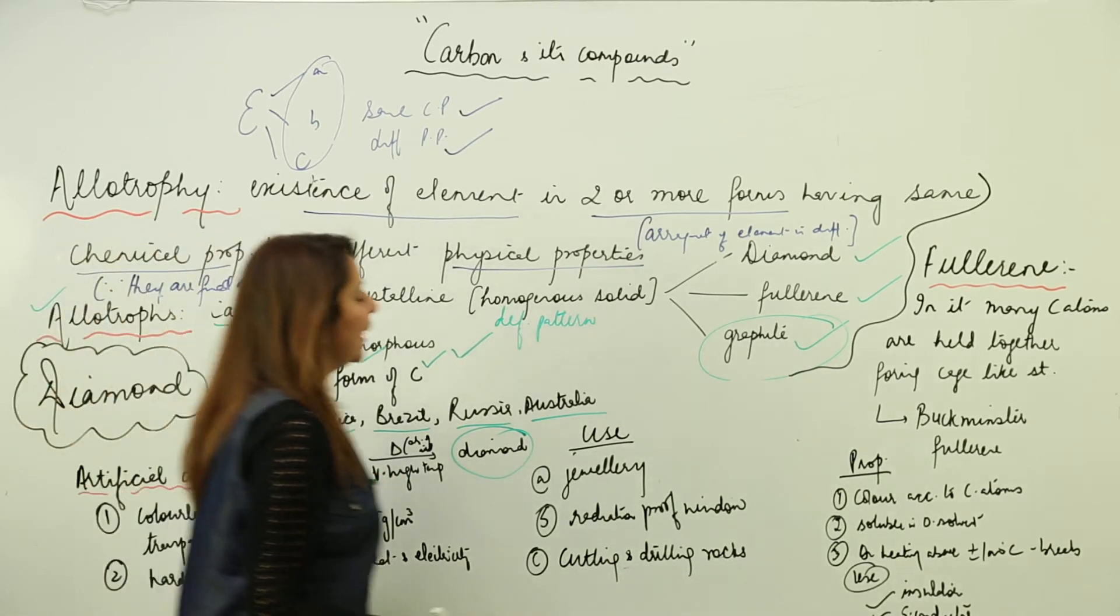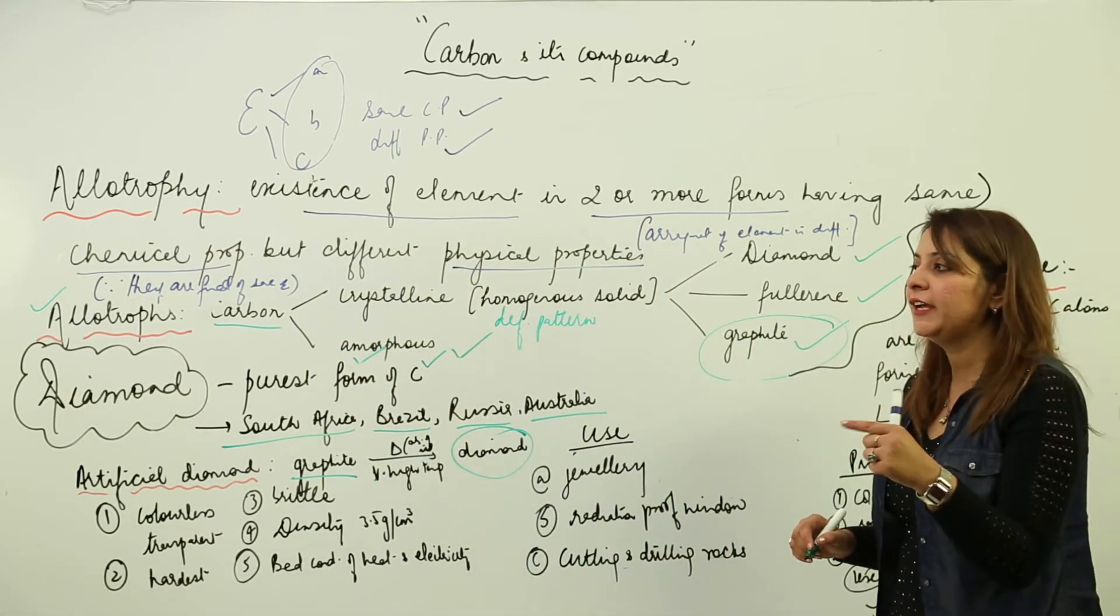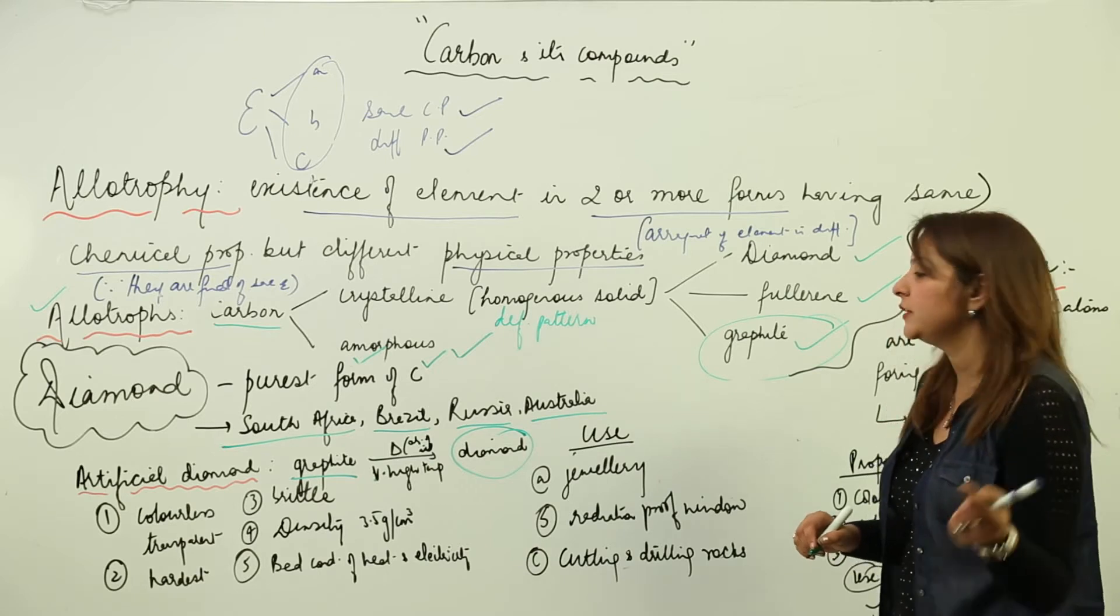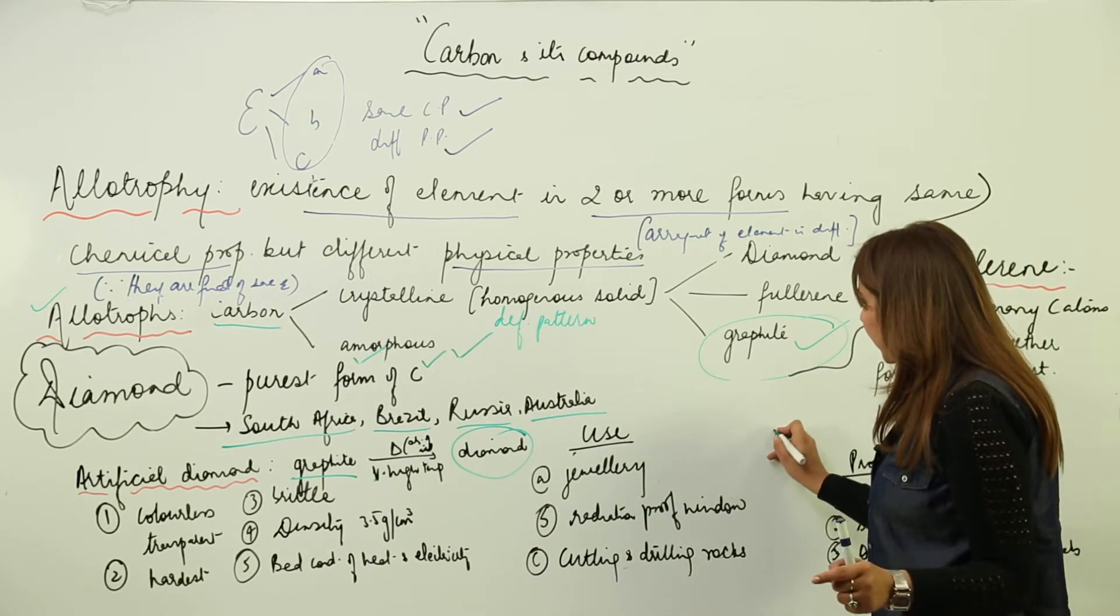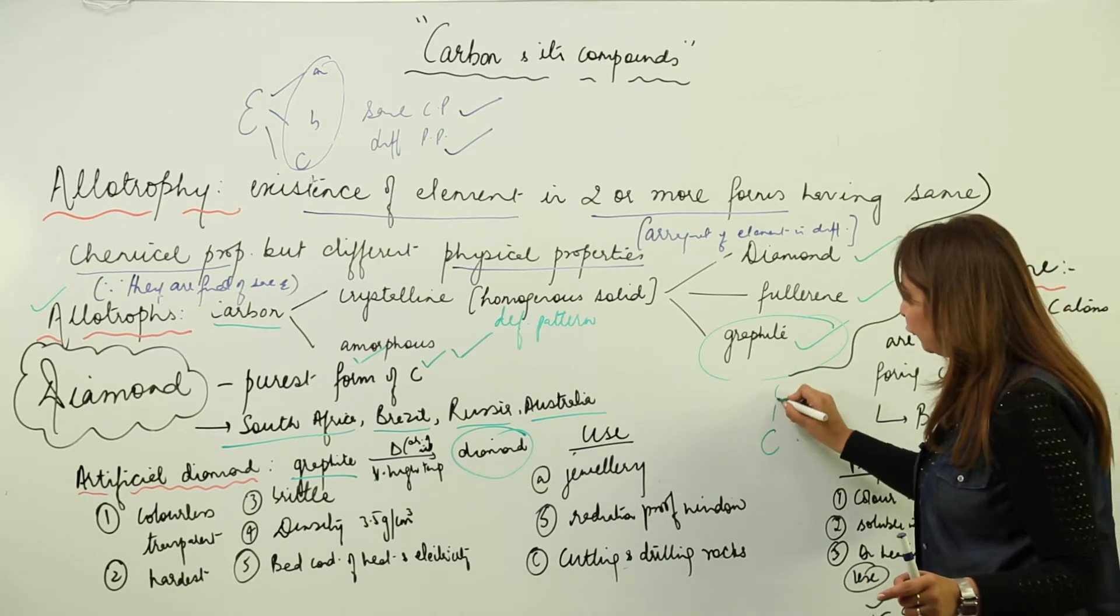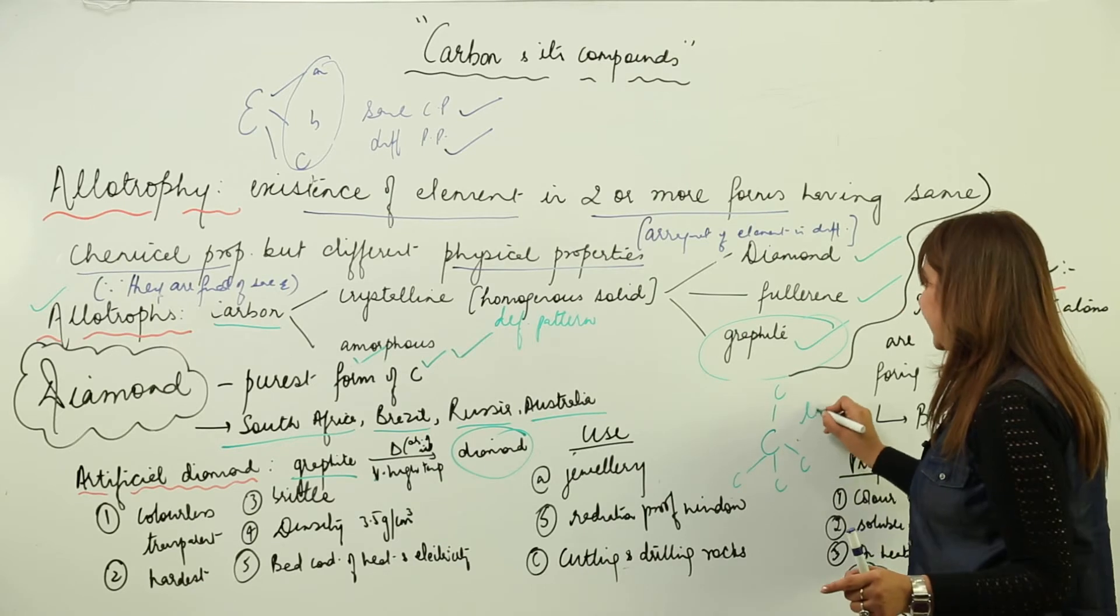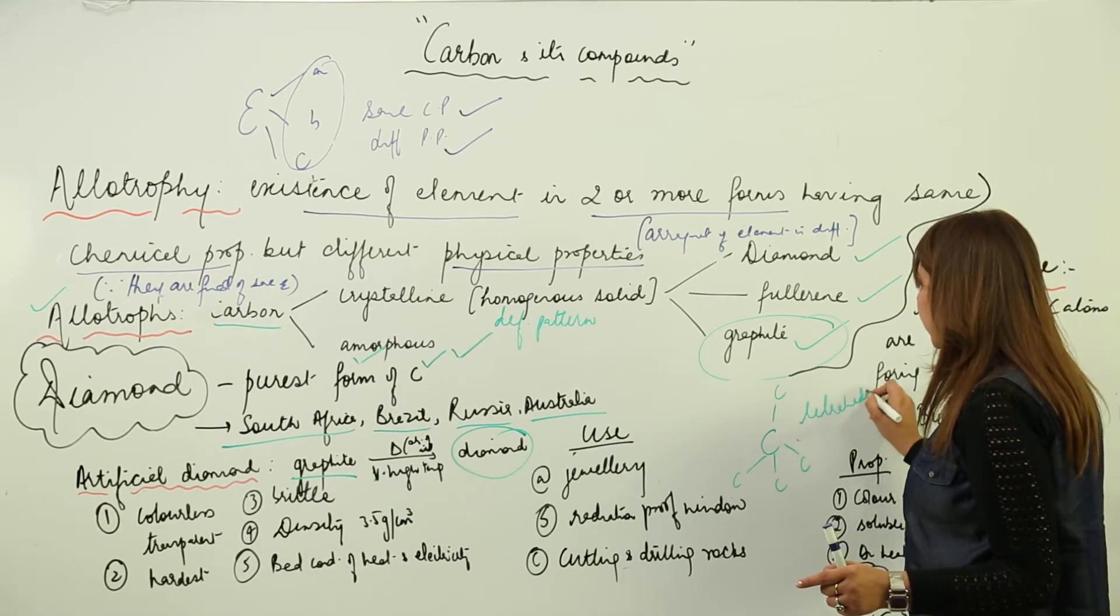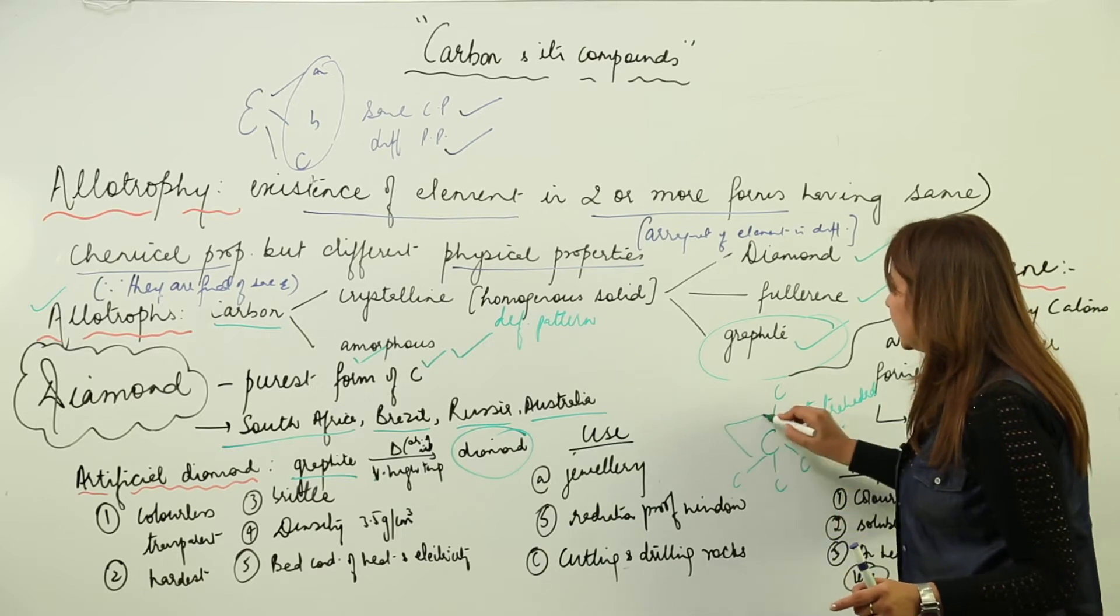What is the basic structure of diamond? Diamond and graphite both have different structures. In diamond, each carbon atom is linked to four other carbon atoms, giving rise to a tetrahedral structure.